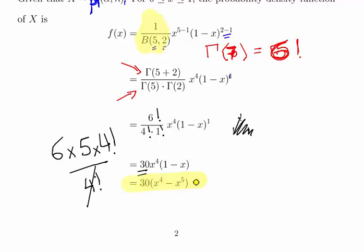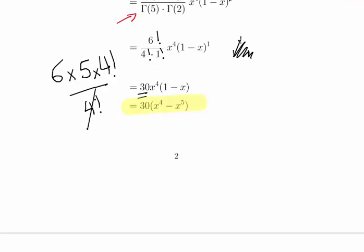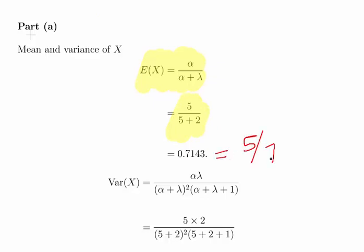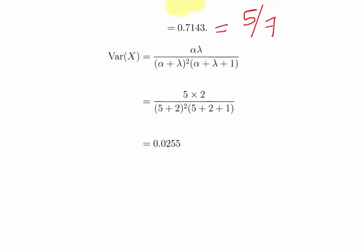So our probability density function is 30 times x to the power of 4, minus x to the power of 5. Now for the expected value: with alpha equal to 5 and lambda equal to 2, it's simply 5 divided by 5 plus 2, which is 5 divided by 7, giving us approximately 0.7143.